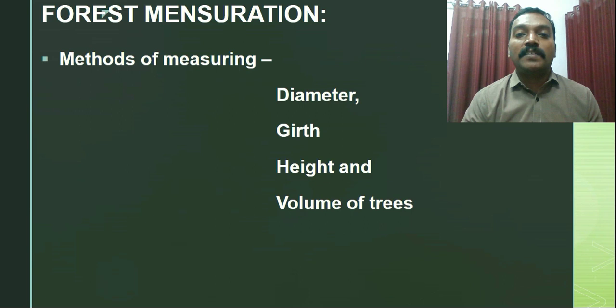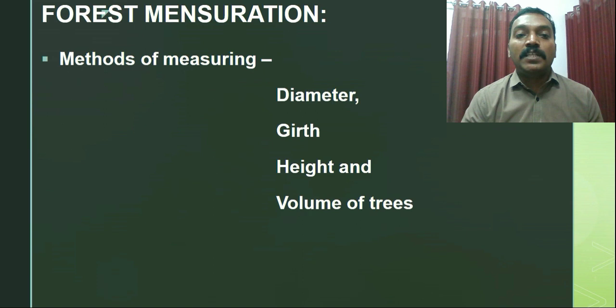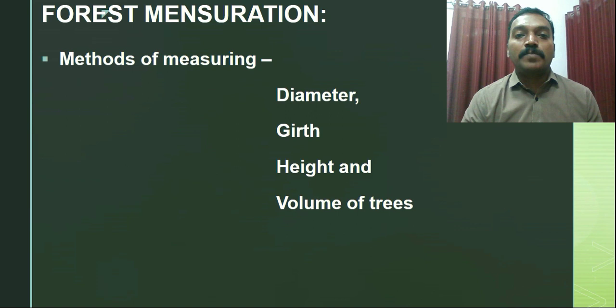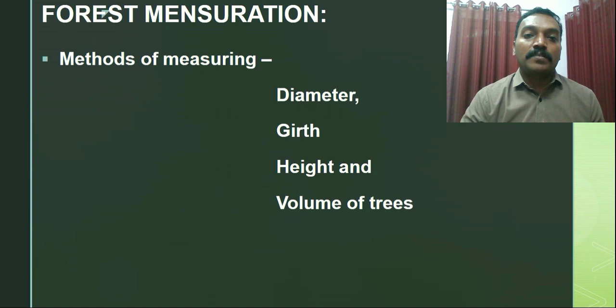Another important branch, the forest working plan, is also directly linked with forest mensuration. The forest working plan is the basic document for forest management, and its preparation is incomplete without knowledge of forest mensuration. Similar to forest management and working plan, this branch has a lot of interconnection with other branches. We will study the various methods of measurement using both instrument and non-instrument methods, enabling us to measure tree or crop diameter, girth, height, and volume.